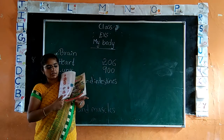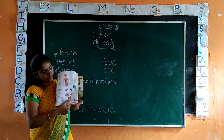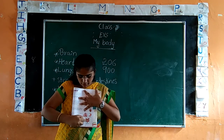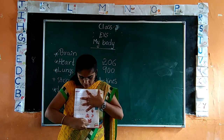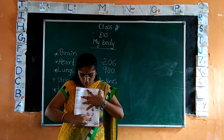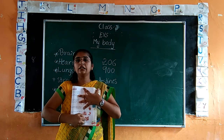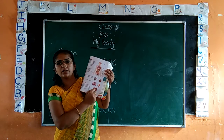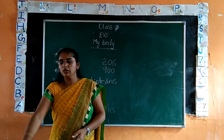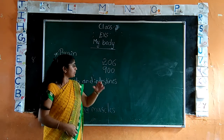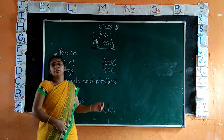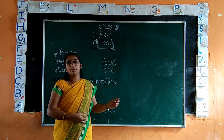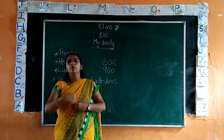Look at your book, page number 144. This is the big intestines and this is the small intestines. These are like tubes. These parts help us to digest our food.